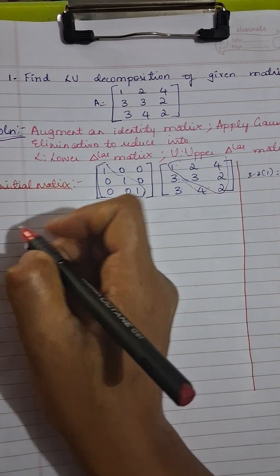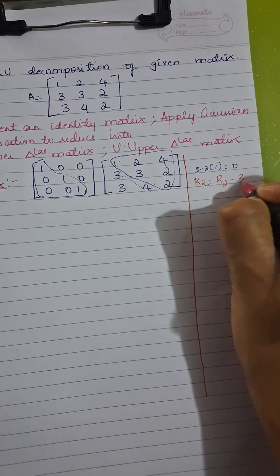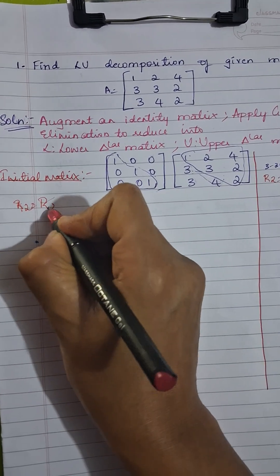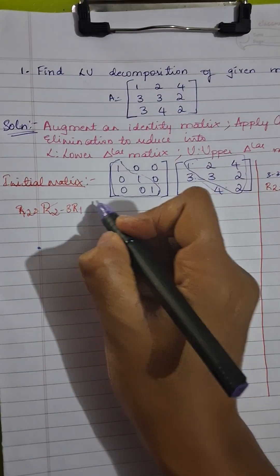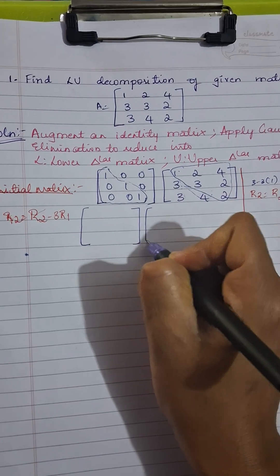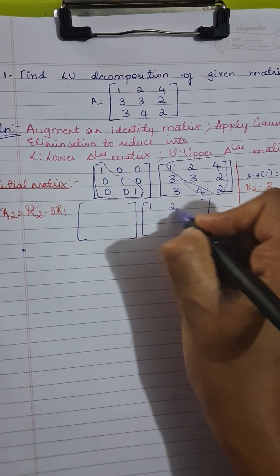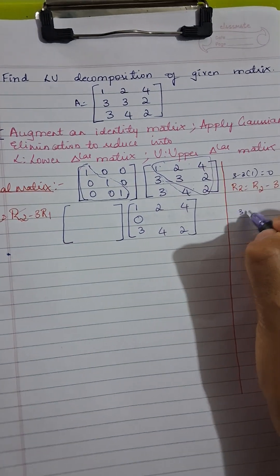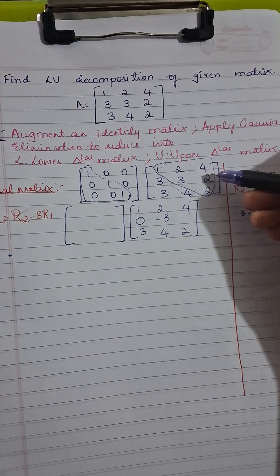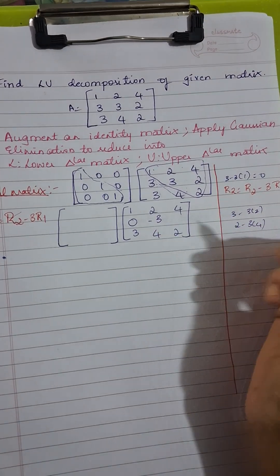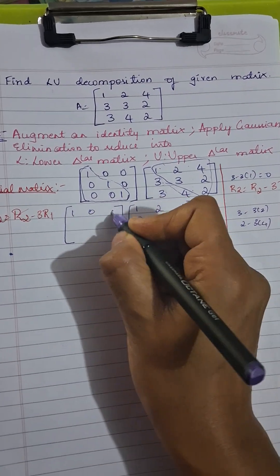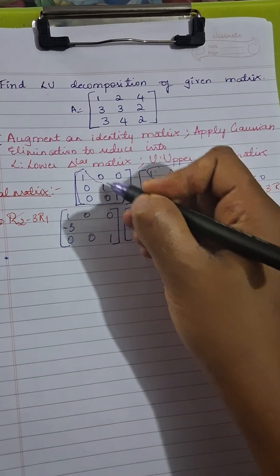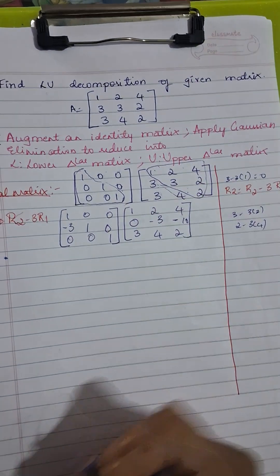The transformation we are going to apply is R2 = R2 − 3R1. Applying this to both matrices: the first row remains as is — 1, 2, 4. The third row also remains as is. For the second row: 3 − 3(1) = 0; 3 − 3(2) = 3 − 6 = −3; 2 − 3(4) = −10. For the identity side, second row becomes: 0 − 3(1) = −3; 1 − 0 = 1; 0 − 0 = 0. This transformation is done.